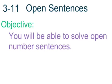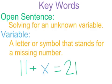Alright guys, today we're going to work on solving open sentences. So the objective today is we'll be able to solve open number sentences. Some keywords for today: an open sentence is solving for an unknown variable, and a variable is a number symbol that stands for the missing number.